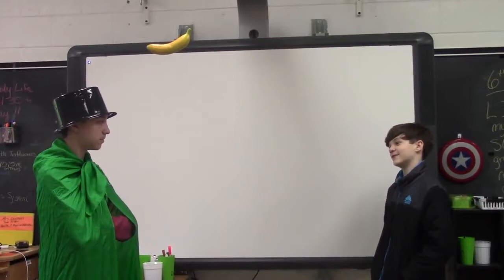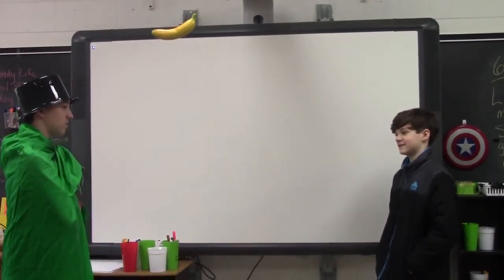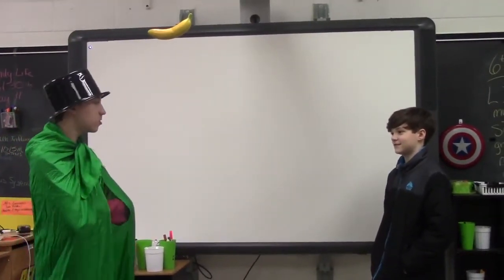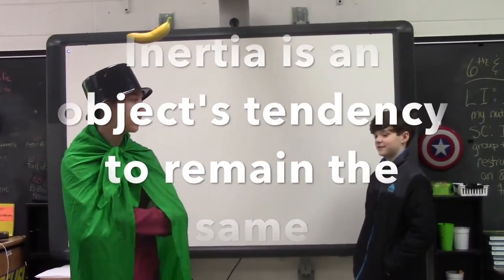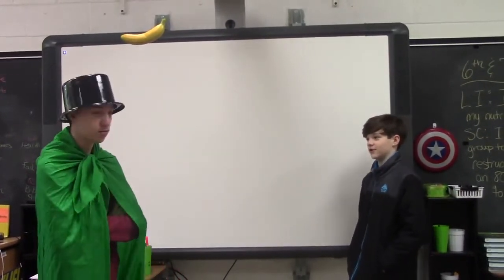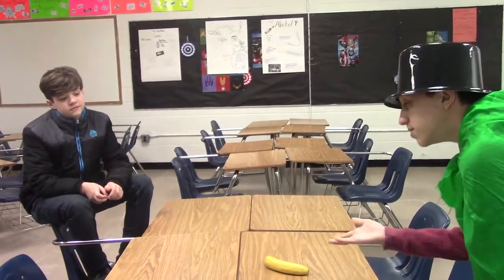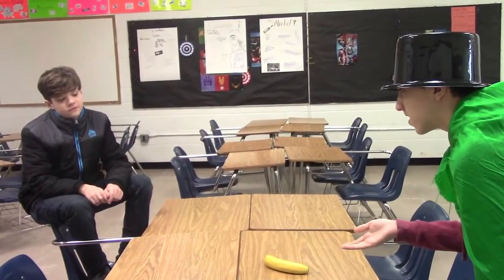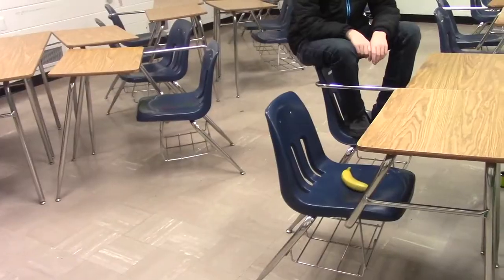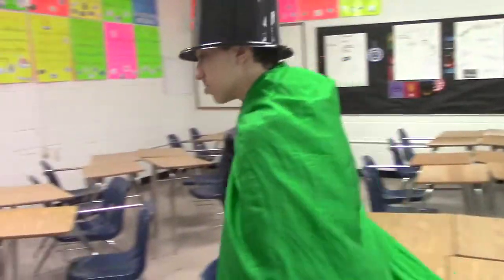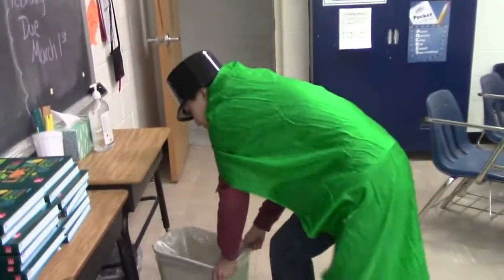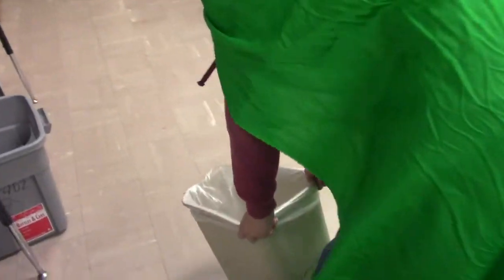Okay, I understand now. There are also other forces acting on objects at rest, like inertia. Inertia is an object's tendency to remain the same. Basically, an object sitting on a table won't move unless an outside force acts upon it. Inertia also means that an object with more mass requires more energy to move — like a trash can requires more effort to move than a banana.